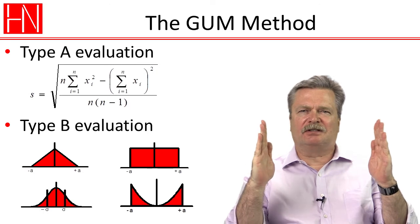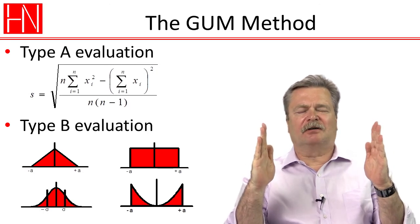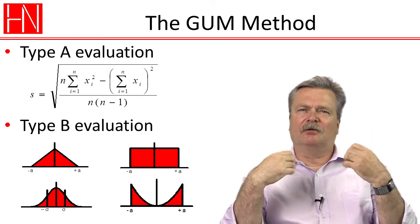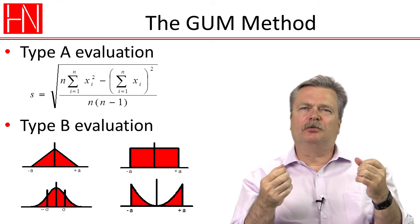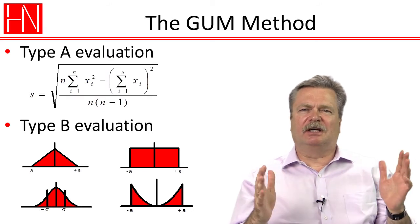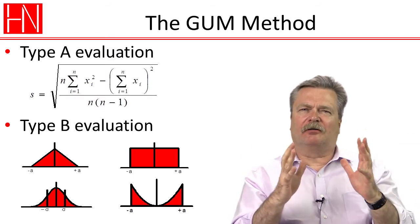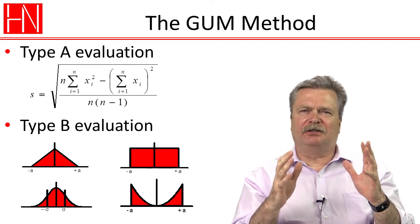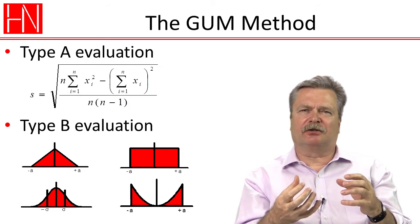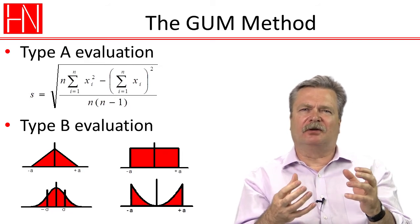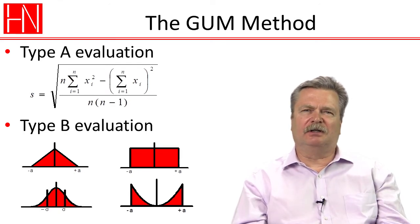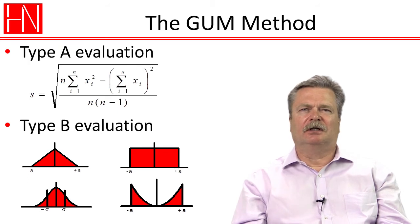And then we talked about how we can assume a distribution between those limits, and we talked about which distributions are appropriate in which cases. And from that we can calculate an equivalent standard deviation, so we could get all of our contributors into a format where each of them has the weight of one standard deviation. And that standard deviation is calculated in terms of how much it influences the measured value that comes out of our measurement. And that was what we needed to do to be able to add them together.